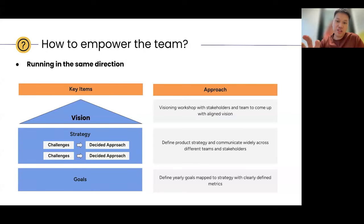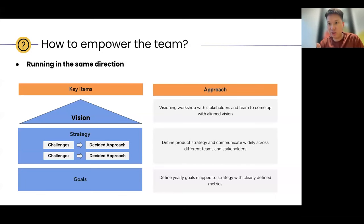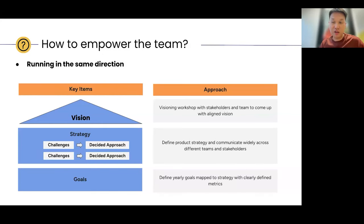I'll share roughly the approach that usually works based on my experience. For vision — typically the most important piece — it involves stakeholders and involves your team. What I like to do is have a visioning workshop with stakeholders and the team all coming together, either on a call or in a room, and we come up with a vision that we are all aligned with. That then forms the basis of writing a strategy and defining goals, which makes it much easier to align.